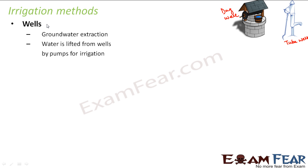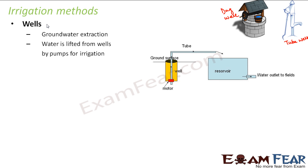Water is lifted from wells by pumps for irrigation. A motor at the well enables water to move up to the ground surface, where it is connected through a tube to a reservoir — a storage tank. Whatever water comes out of the dug well or tube well is taken through a tube to the reservoir, and from there an outlet carries the water to the fields. The well continuously fetches underground water, it collects in the reservoir, and from there it is taken to the fields — making use of underground water for irrigation.